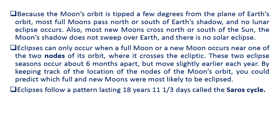Eclipses follow a pattern lasting 18 years and 11 and one-third days, called the Saros cycle.